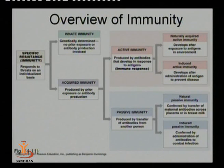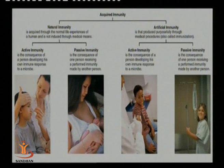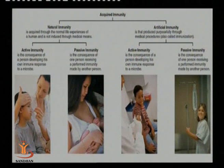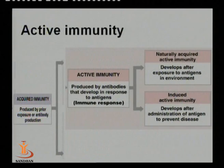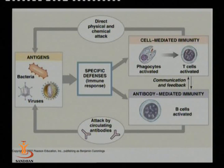The first and second line defense mechanisms are considered non-specific immune defense — they are common for any foreign particles entering the body. The third line defense is a highly specific defense mechanism involving humoral immunity. Acquired immunity includes active and passive immunity, with various examples given naturally as well as artificially.